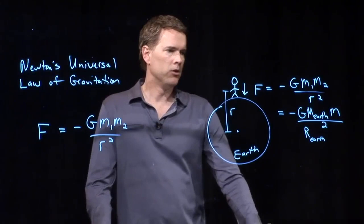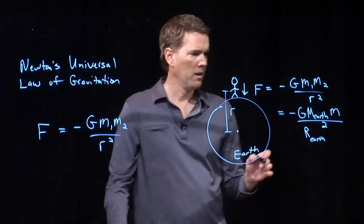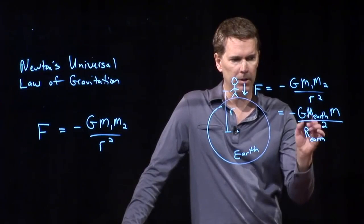G turns out to be a number, a universal number, 6.67 times 10 to the minus 11. We know the mass of the Earth. We know the radius of the Earth. And if I plug in all those numbers, guess what I get?